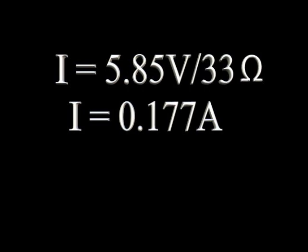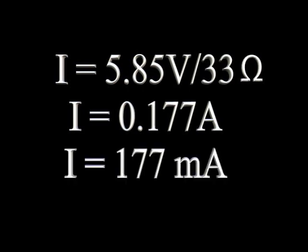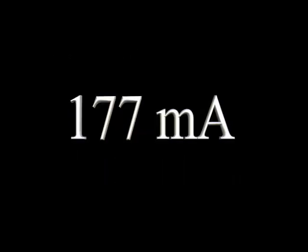Small currents like this are usually expressed as milliamperes — one one-thousandth of an amp. In this case, we have 177 milliamps. Ohm's Law predicts that 177 milliamps of current will flow in this circuit.